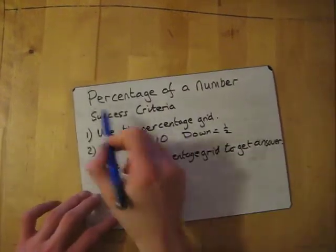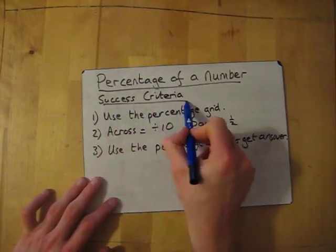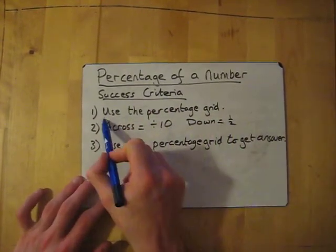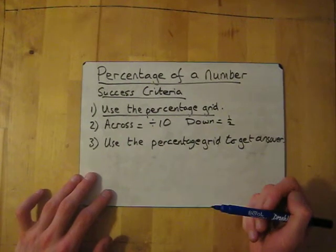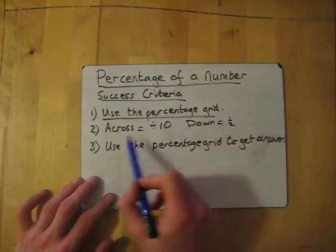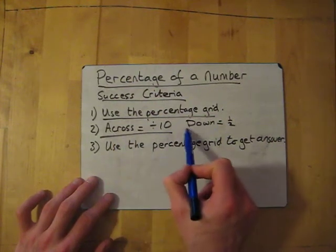Right, we're going to have a look at percentage of a number. The success criteria for this is: use the percentage grid, which is on the website, and whenever you go across on the grid you divide by 10.